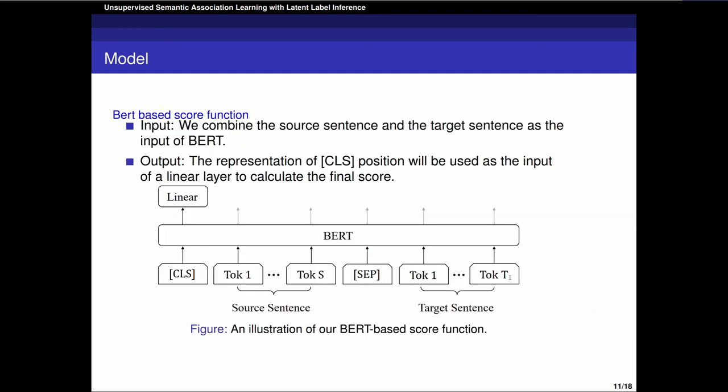Finally, we use BERT as the score function. We combine the source sentence and the target sentence as the input of BERT. And the representation of CLS position will be used as the input of a linear layer to calculate the final score. In the training process, we only train the last N-layer parameters of BERT to avoid overfitting.